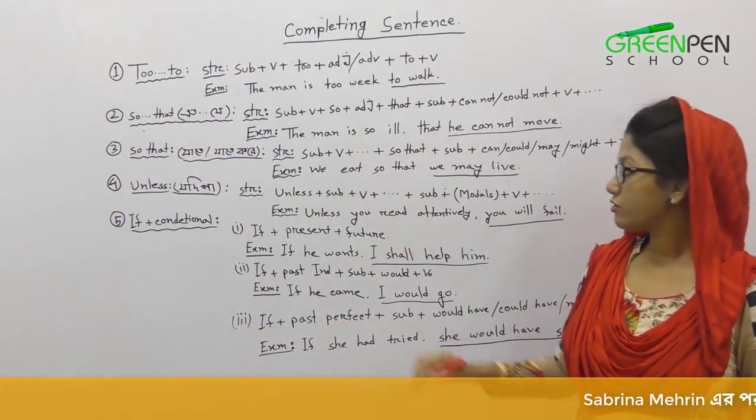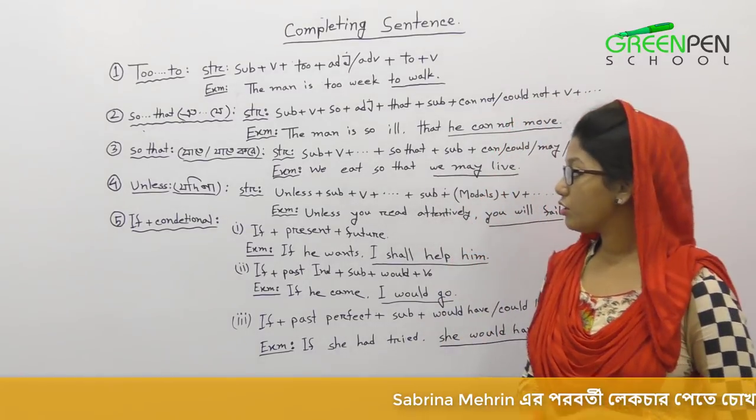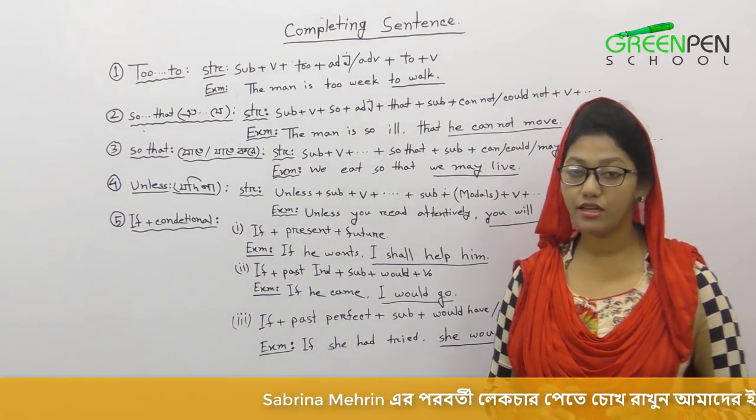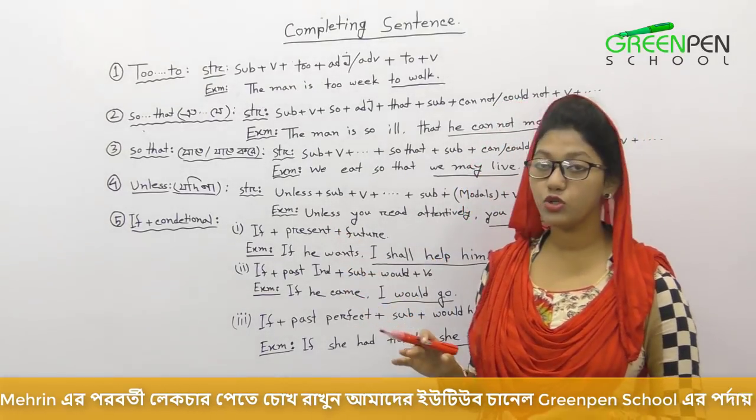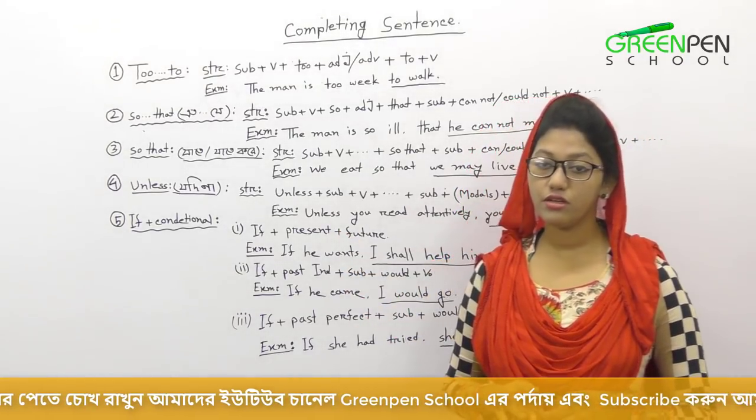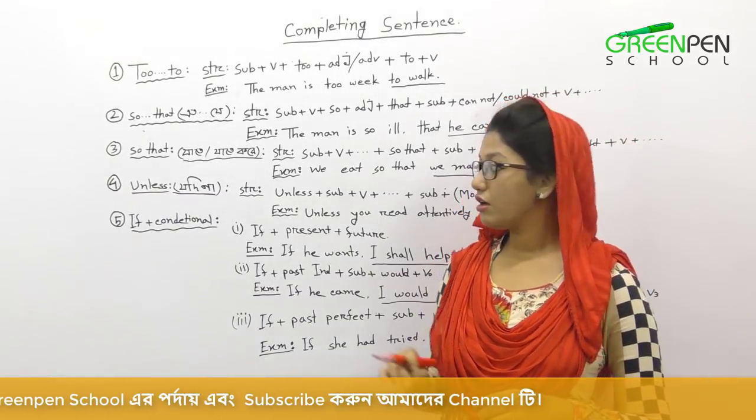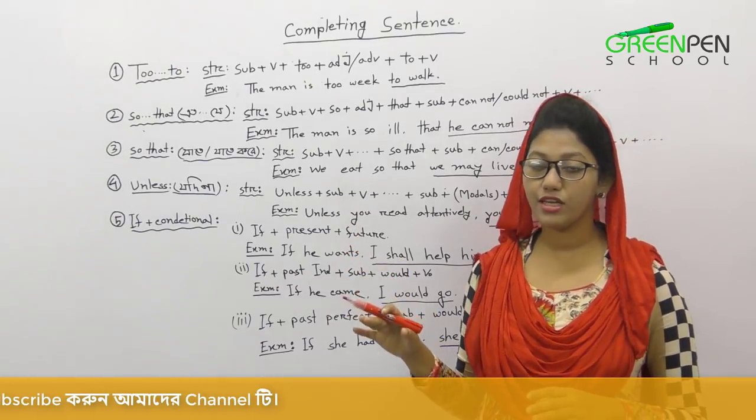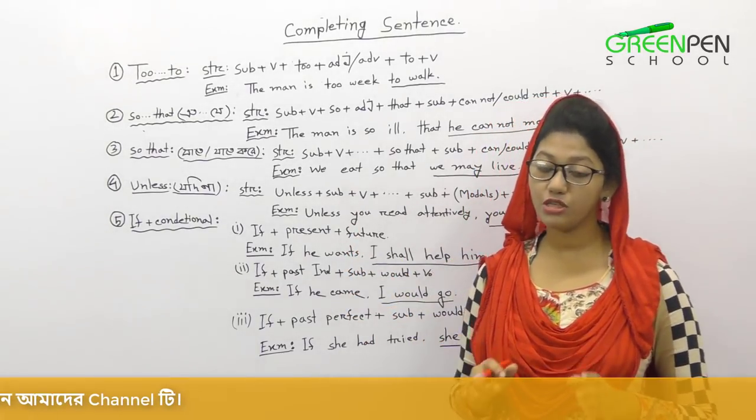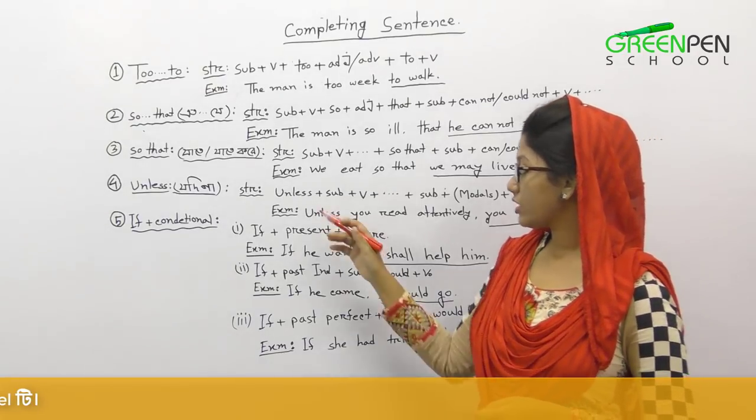The fourth rule is unless. Unless or not. We will have negative sentence. Unless or not, we will not use the sentence. Unless or not, we will complete the sentence. Let's see, I will show you the structure.